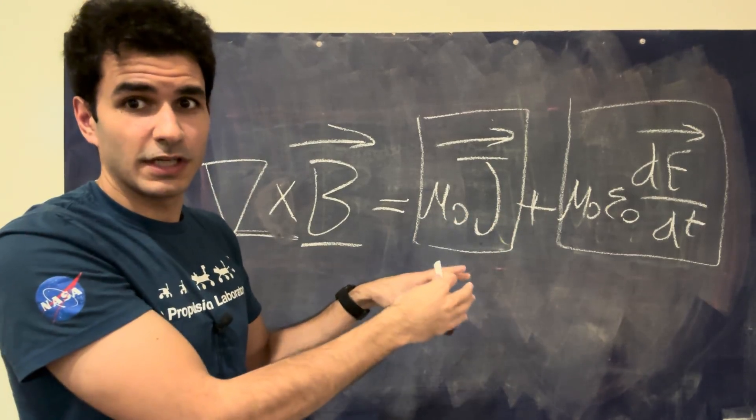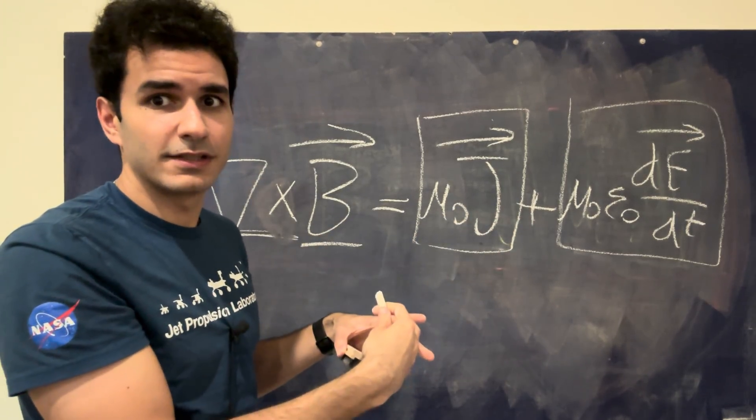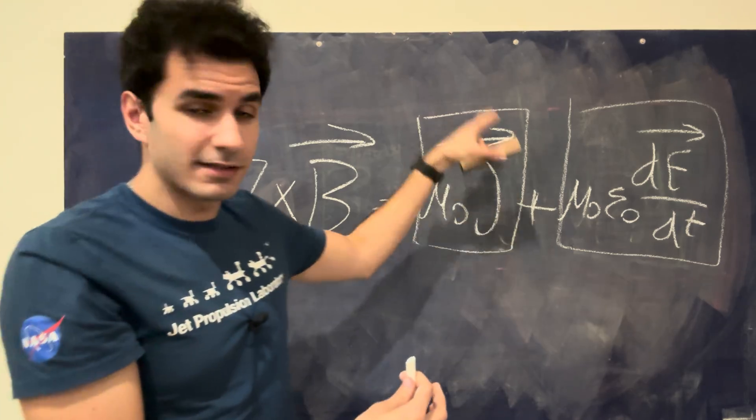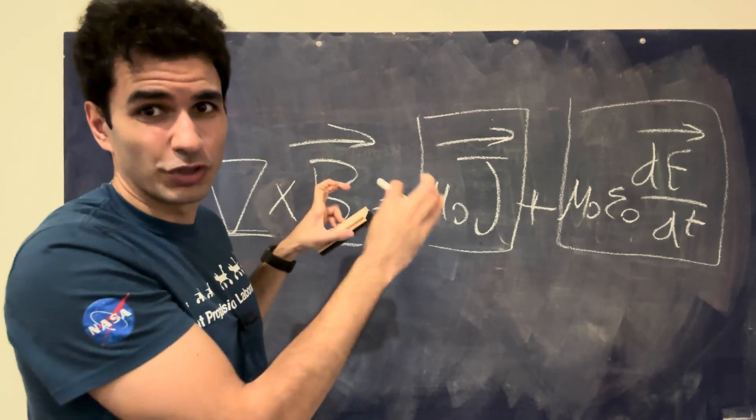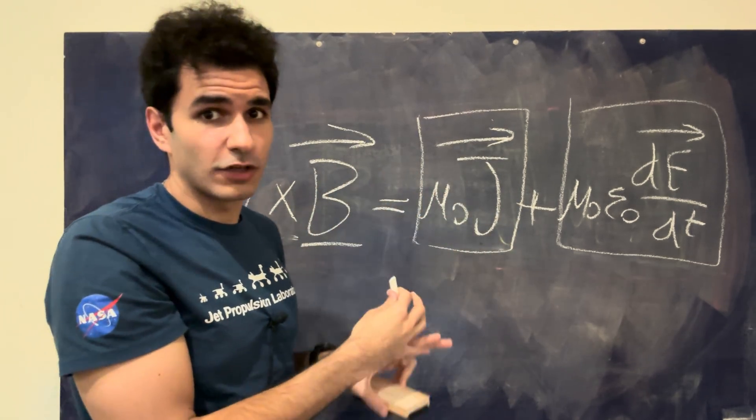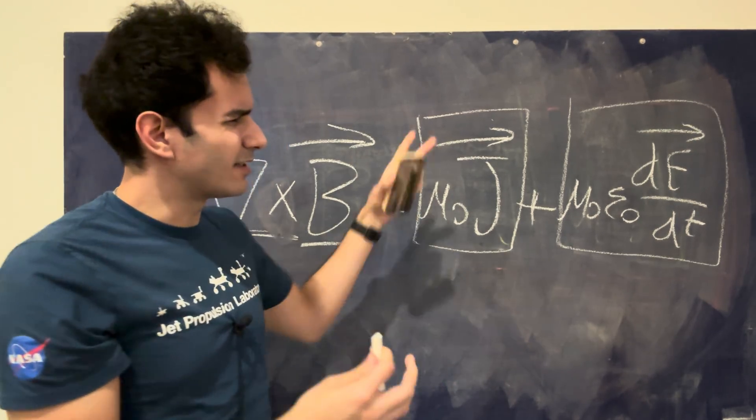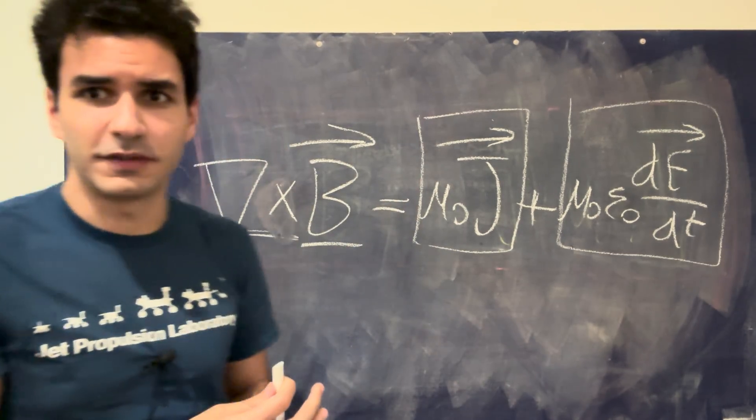If it was a multiplication sign, that means you need both conditions to exist. It's kind of like an AND gate. But since it's only a plus sign, then it's like an OR gate. One of them can cause the other. Now what does this mean? What is current density? What is changing electric field? What is changing magnetic field?